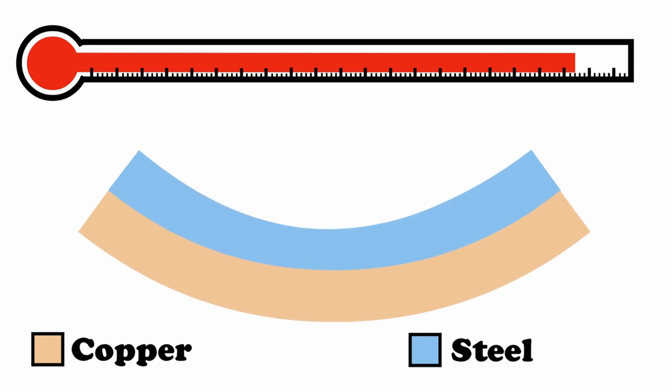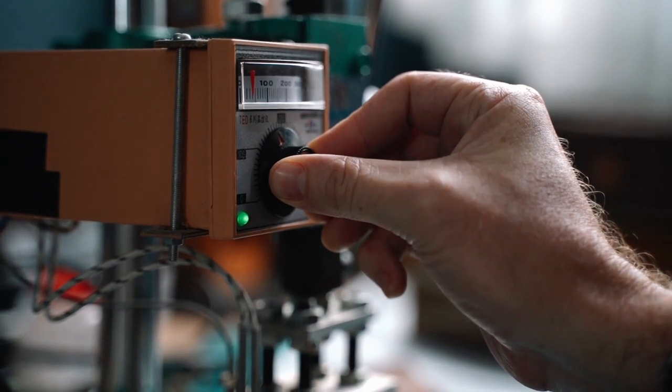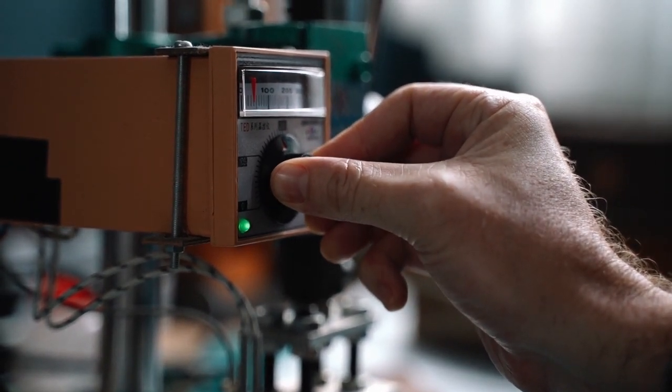The knob that controls your toasting level changes the distance that the bi-metallic strip has to bend to shut off the switch. This varies the time of toasting.